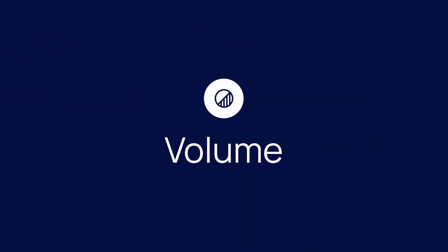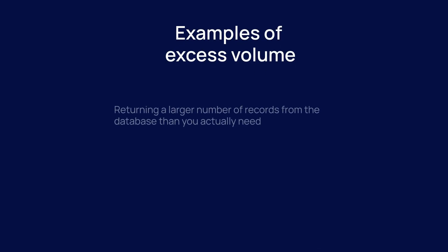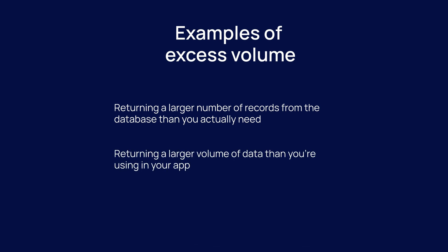Next, we have volume. Volume is about being aware of the amount of data the server is returning when you give it a request. Using the car analogy, excess volume is like driving from point A to point B while hauling unnecessary cargo that doesn't serve a purpose. Some examples that often lead to additional consumption here are returning a larger number of records from the database than you actually need, or returning a larger volume of data in those records than you're using in your app.